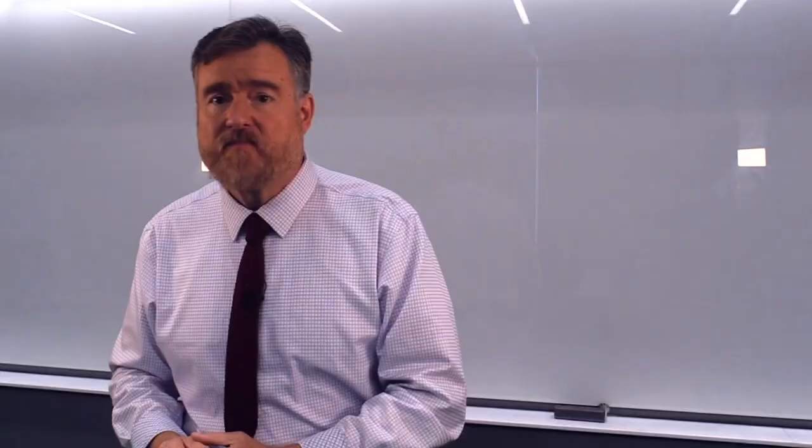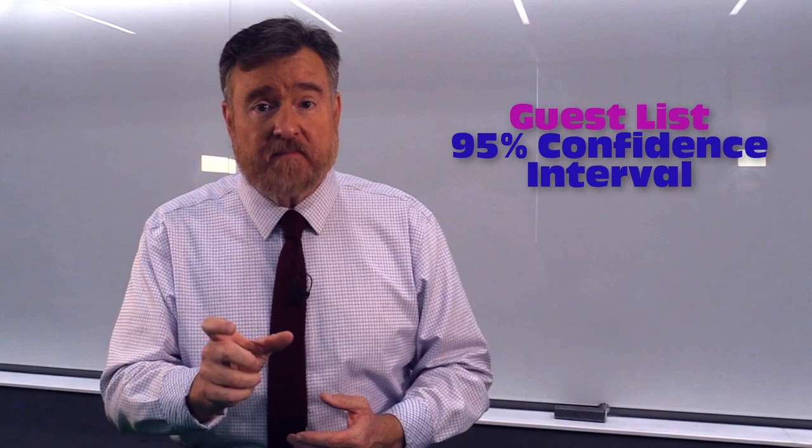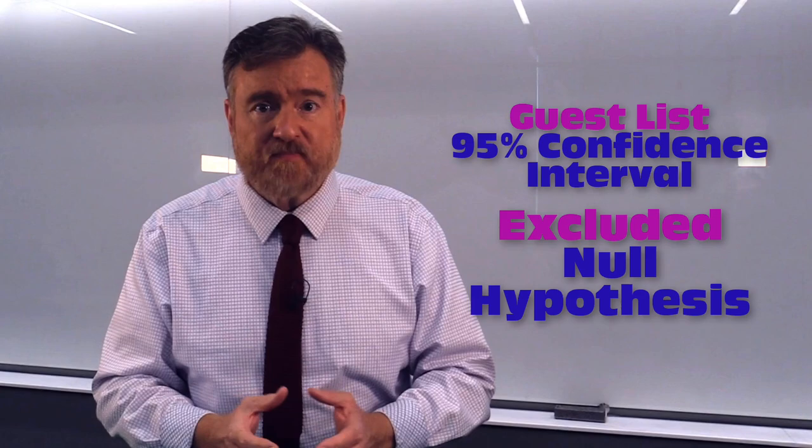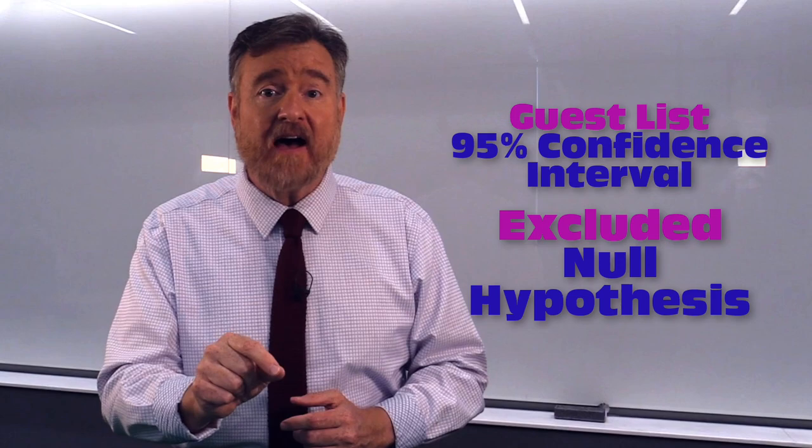In this example, the guest list is the 95% confidence interval, and the thing we want to exclude is the null hypothesis value. Statistical significance is good news — your ex is not on the guest list. Your null hypothesis value is not in that confidence interval.